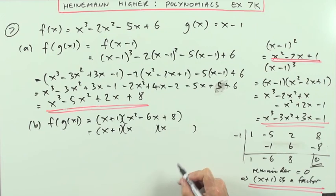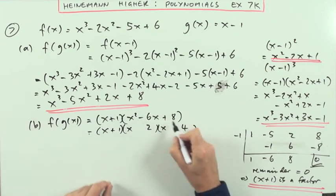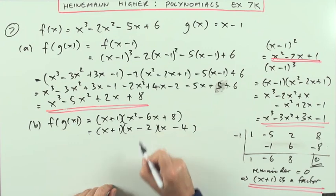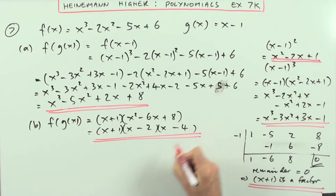It must be x times x, 2 times 4 is 8, so it must be 2 and 4. And a negative to the bigger. That says they're both the same. So that would be the factorisation then. So part B, there we go.